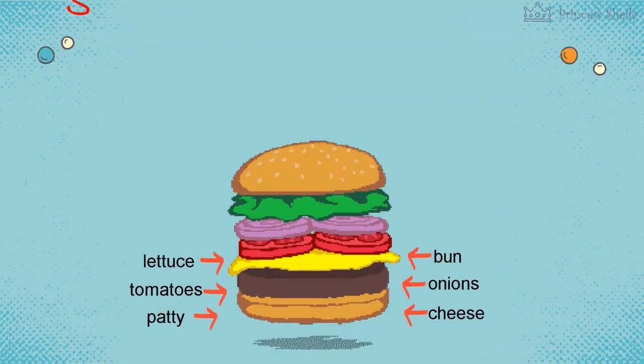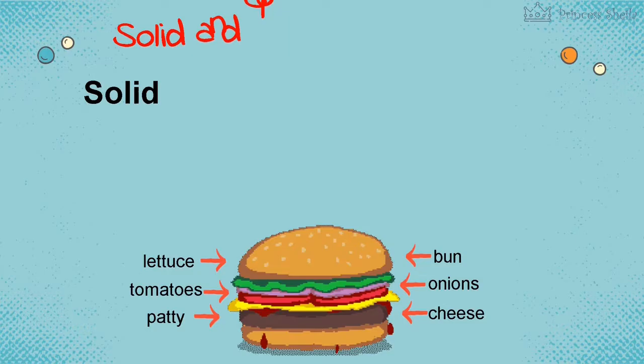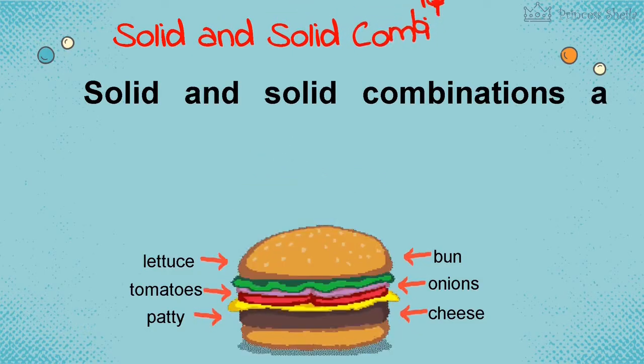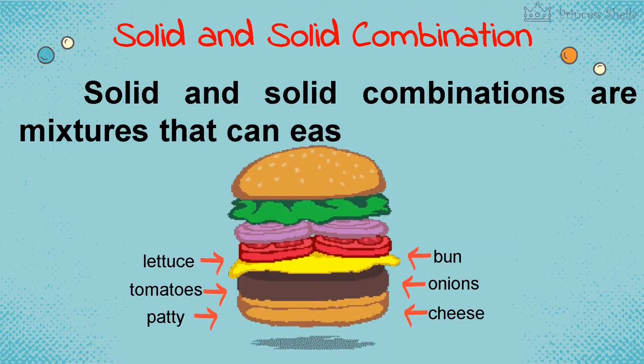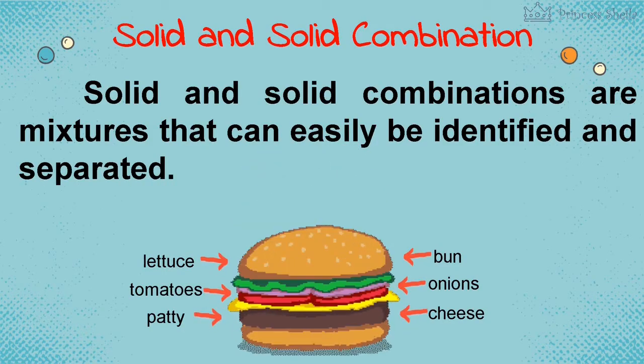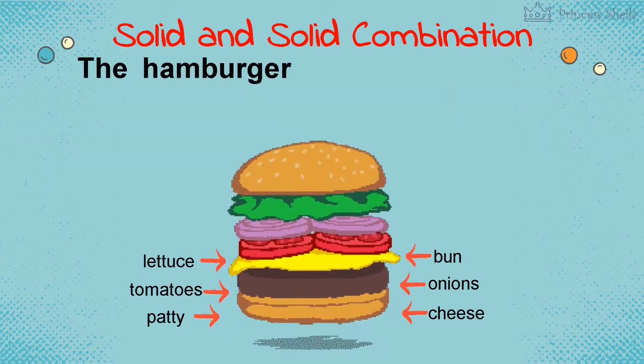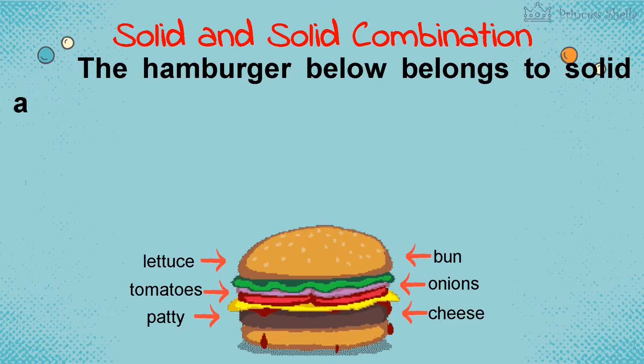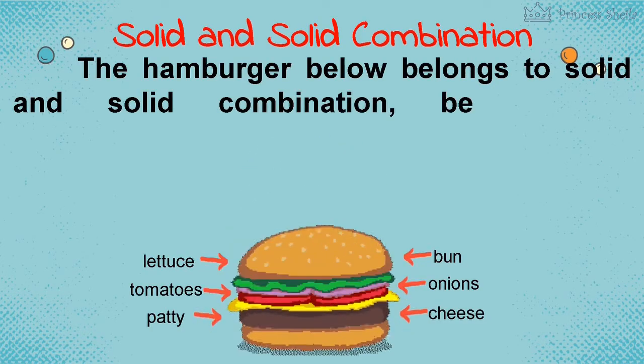Solid and solid combination. Solid and solid combinations are mixtures that can easily be identified and separated. The hamburger below belongs to solid and solid combination because its ingredients can be separated.